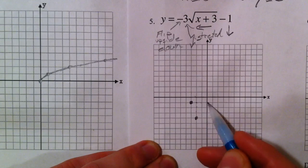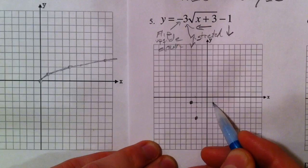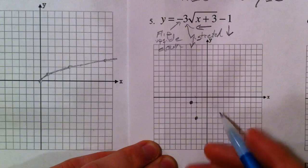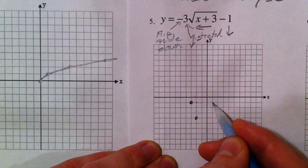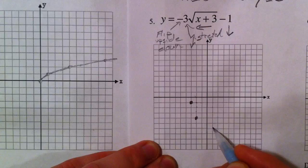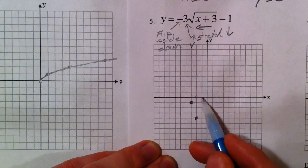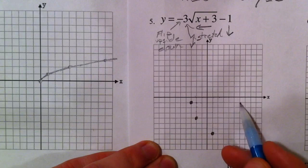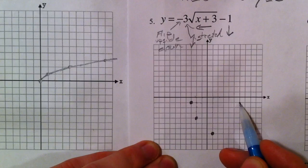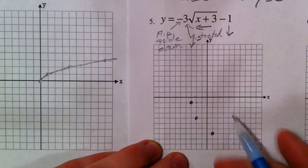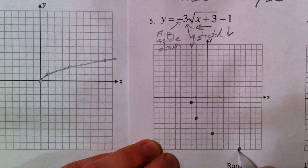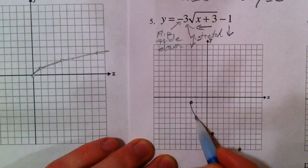Normally we go over to the right four, square root of four is two, but that two is multiplied by negative three, so we go down six. Then going over nine to the right, we'd normally go down three because the square root of nine is three, but we multiply by the vertical stretch of three, so we go down nine. With our grid being ten units down, we sketch the shape accordingly.